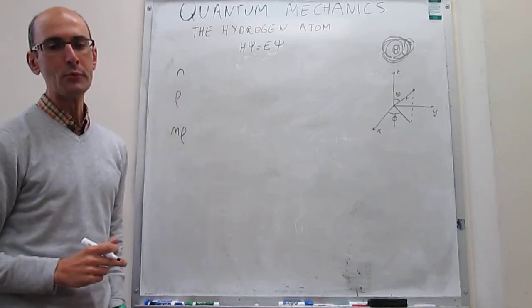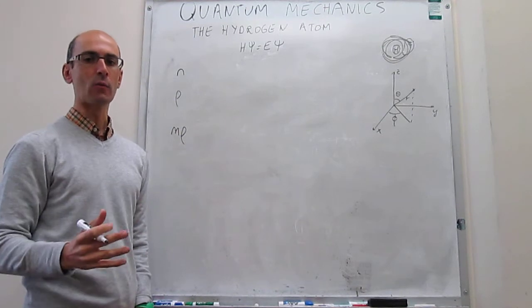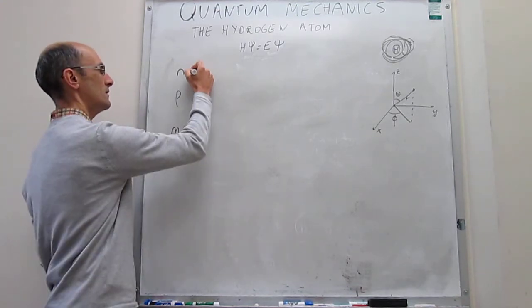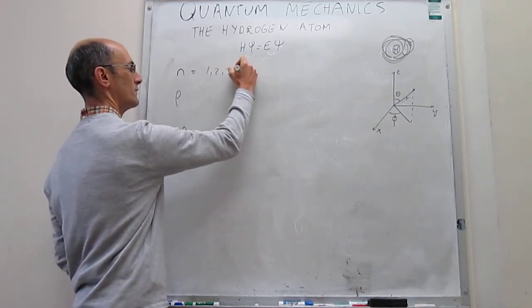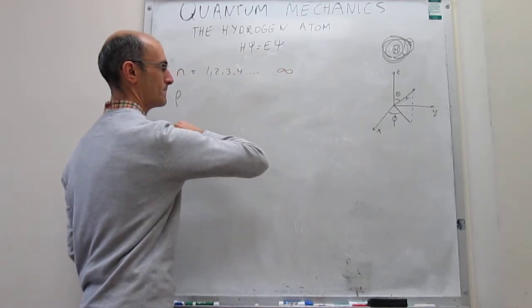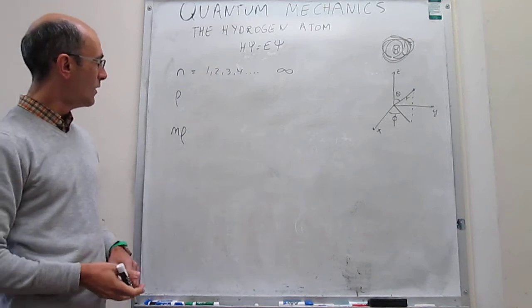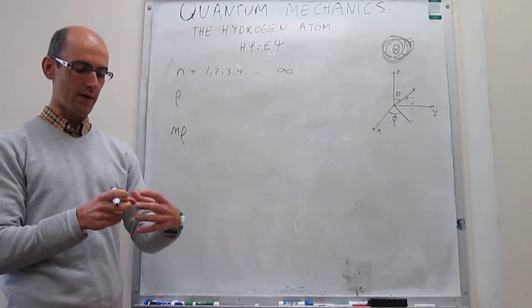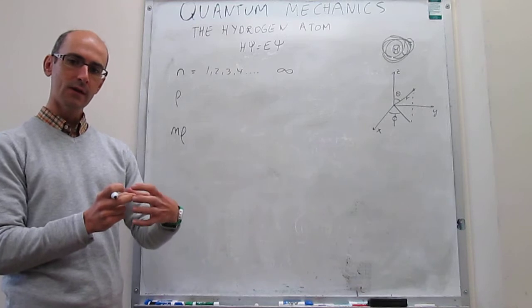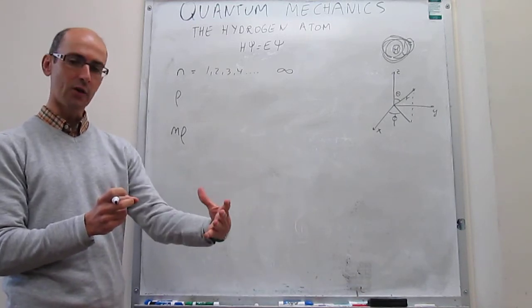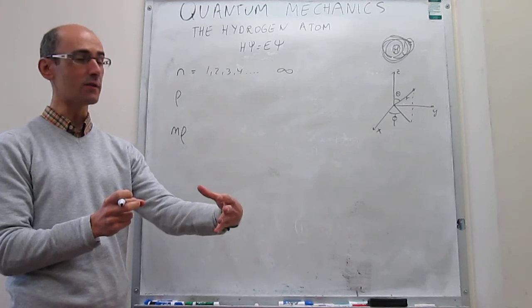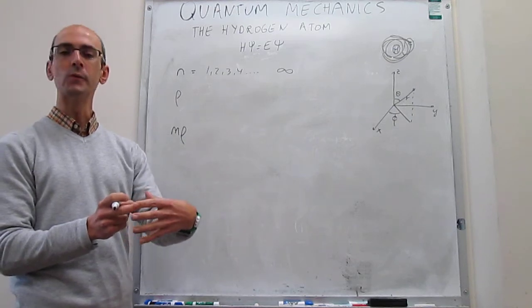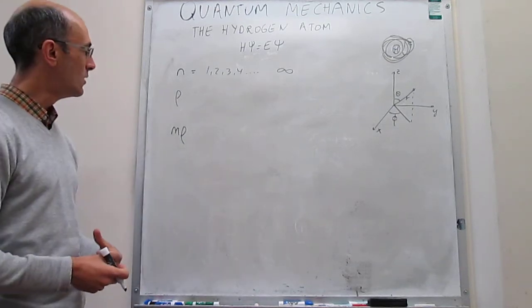N is called the principal quantum number. The principal quantum number has no restriction other than it has to be an integer number. So N is going to be equal to 1, 2, 3, 4, all the way to infinity. N determines the size of the wave function — whether the electron prefers to be closer to the nucleus or farther from the nucleus.